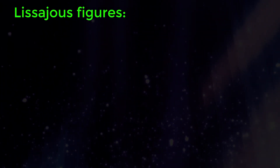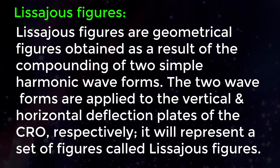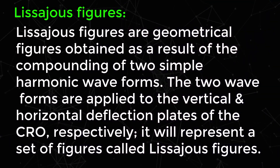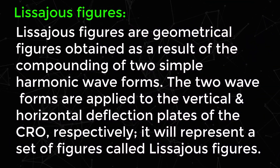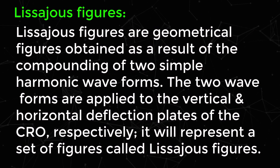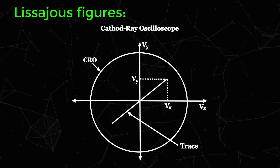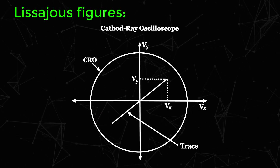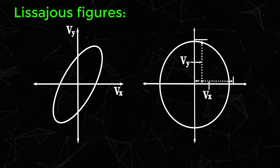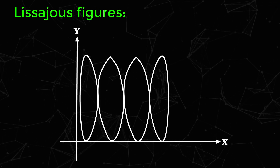Let's look into Lissajous figures. Lissajous figures are geometrical figures obtained as a result of the compounding of two simple harmonic waveforms. The two waveforms are applied to the vertical and horizontal deflection plates respectively, and this will represent a set of figures called Lissajous figures — including figures for two identical signals, figures for two signals which are out of phase, and Lissajous figures of complex waveforms.